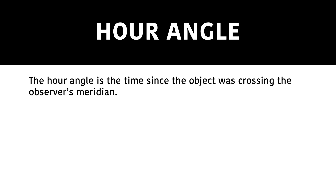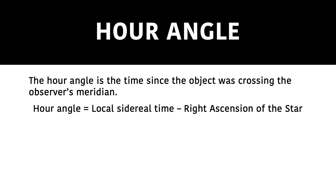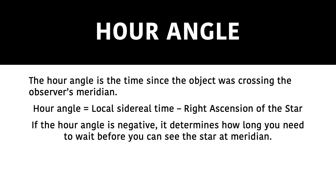Let's have a look at hour angle. The hour angle is the time since the object was crossing the observer's meridian — basically telling you how long it's been since an object has crossed the observer's meridian. To calculate this, we take the hour angle as the local sidereal time of the observer minus the right ascension of that particular star. If the hour angle is negative, it determines how long an observer would need to wait before they can see the star at their meridian.